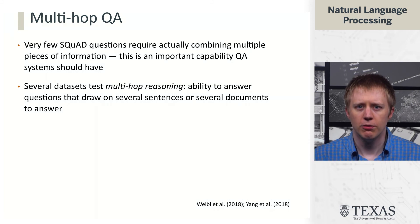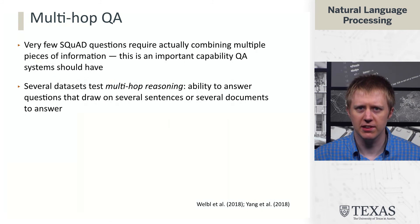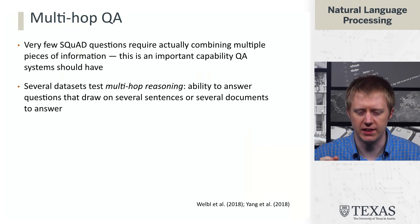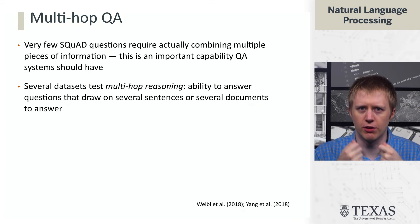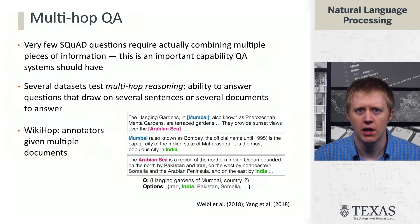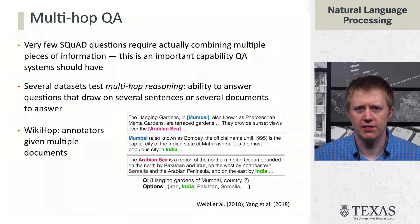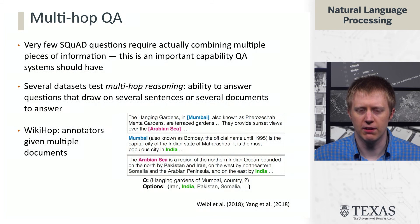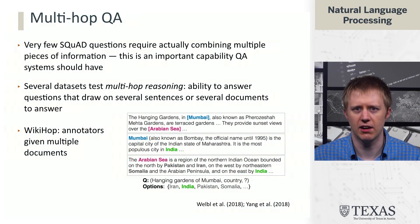Folks went and built a few different datasets to explicitly test if models could do this kind of multi-hop reasoning, where we want to be able to take information and combine it during the question answering process. One example is from a dataset called WikiHop, where the question is not really formatted in natural language — it's more asking for a relation, such as: the Hanging Gardens of Mumbai are in what country.